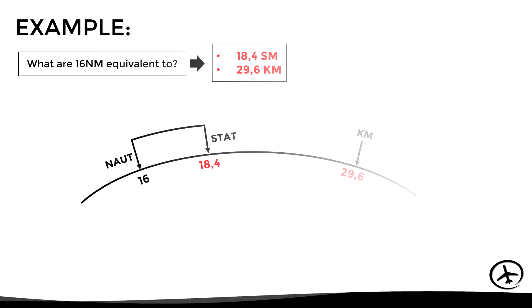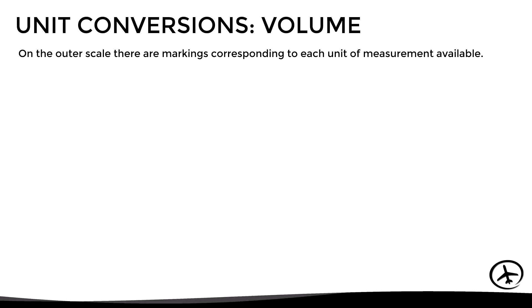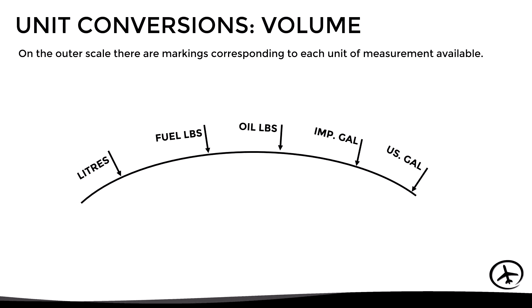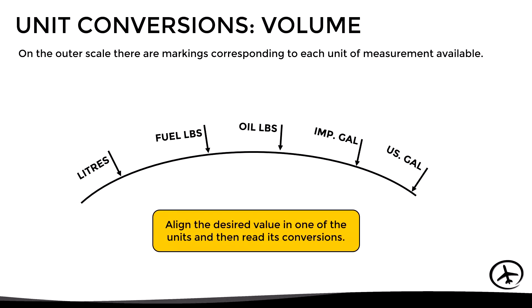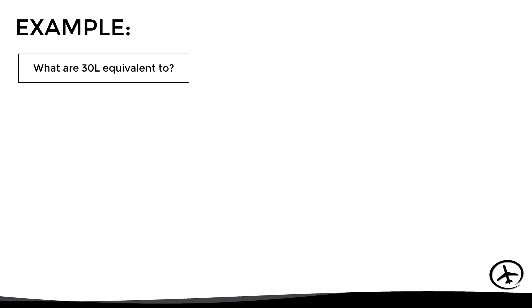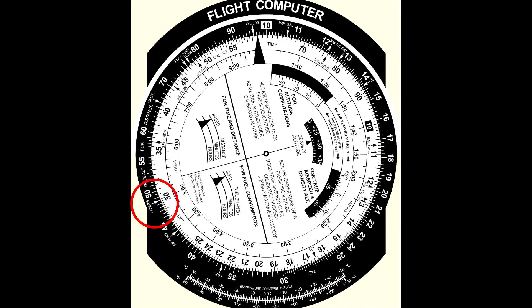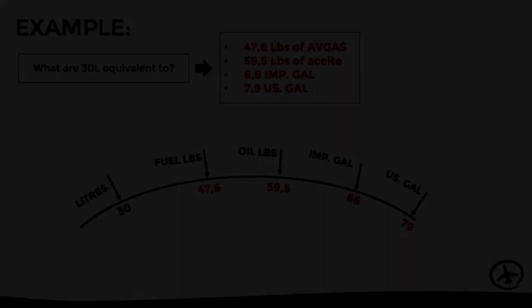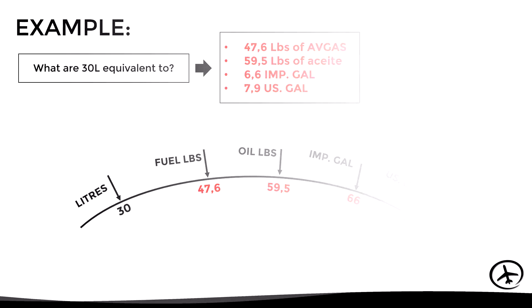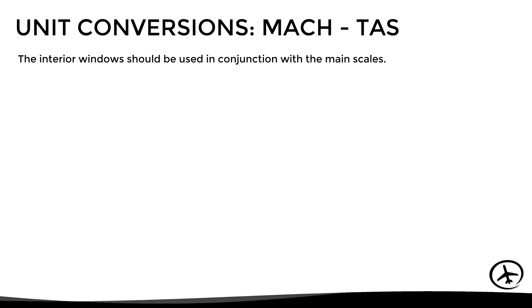For volume unit conversions, there are several arrows with different units around the outer scale, used the same way as distance conversions. The units available are typically liters, pounds of fuel, pounds of oil, imperial gallons, and US gallons. For example, to convert 30 liters, align 30 with the liters arrow and read the corresponding values for all other units.